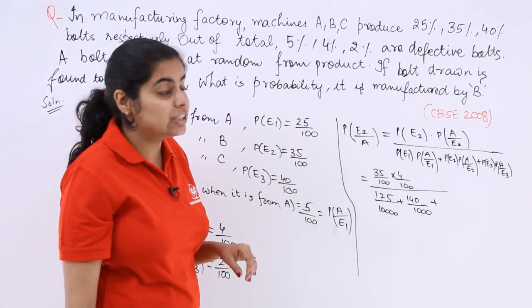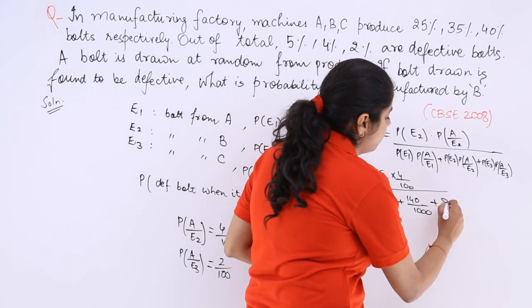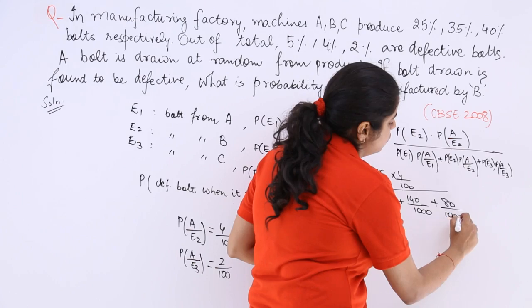Last but not the least, E3 and A by E3. So E3 is 40 and A by E3 is this, so 80 over 1, 2, 3, 4.